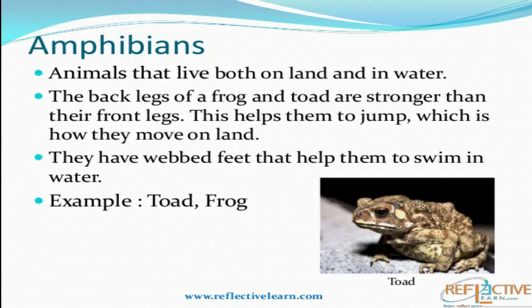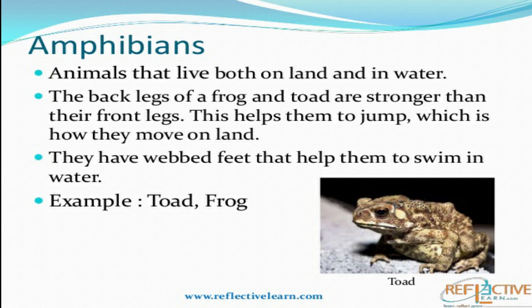Now, what are the adaptations of amphibians? Amphibians are the animals which live both on land and in water. They have moist skin to breathe in water and also have lungs to breathe on land. They also have webbed feet to swim. Amphibians like frogs and salamanders have very strong back legs and front legs which help them to hop and move on land.